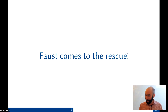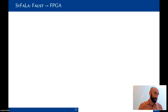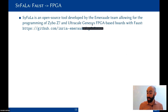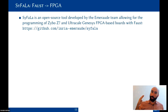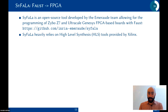We have Faust to help us through all these problems. We've been working on a project called CFA — it's an open-source toolchain that allows you to program FPGAs with Faust. You can find it on GitHub. It currently supports the Zynq Z7 and the UltraScale Zynq FPGA series, which are very powerful but also very expensive. FPGA prices range from $20 to $10,000.